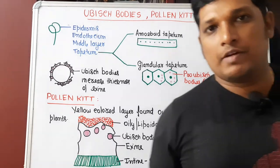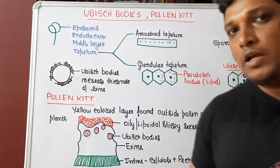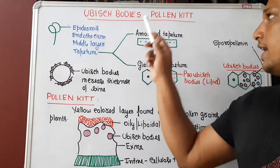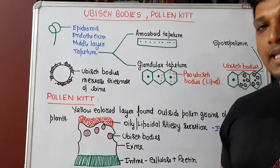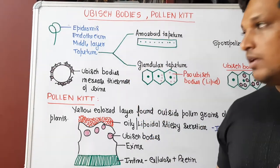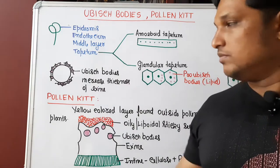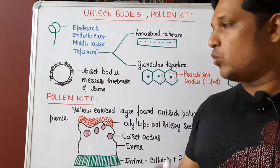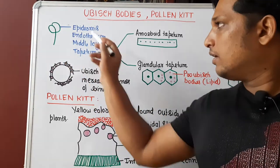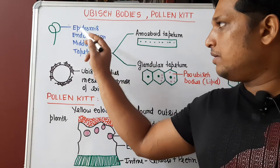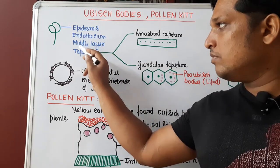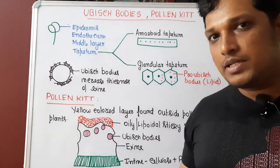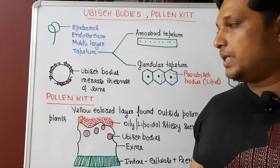Hello, good morning everyone. Now we are going to understand the meaning of Ubisch bodies and pollen kit. If you take a stamen, its anther has anther walls: the outermost epidermis, then comes endothecium, middle layer, and the important layer for nourishment is tapetum.